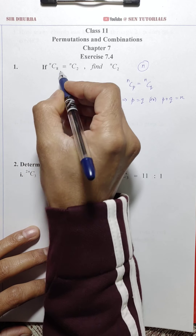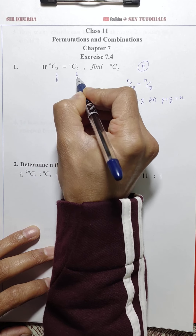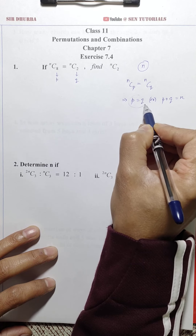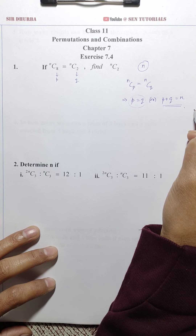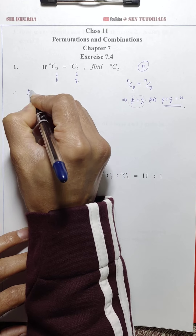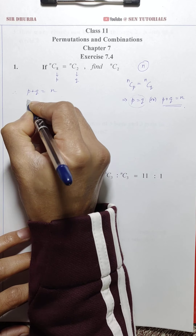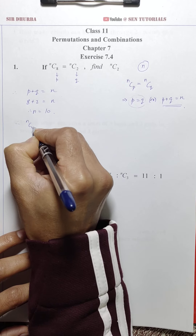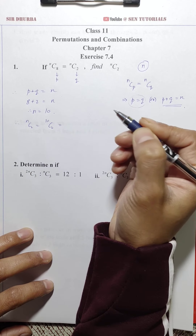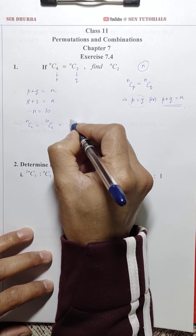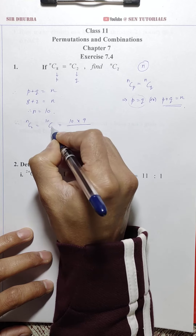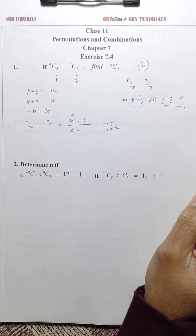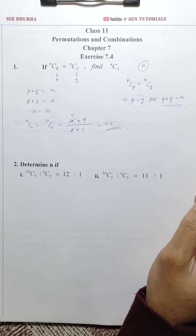Here P is 8 and Q is 2. Since P is not equal to Q, we use P + Q = N, so 8 + 2 = N, therefore N = 10. So nC2 = 10C2. Using the shortcut formula: 10 × 9 divided by 2, which gives 45. Simple as that — using the formulas it becomes very easy.